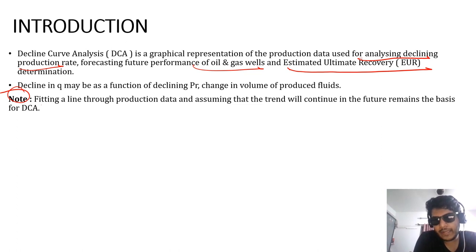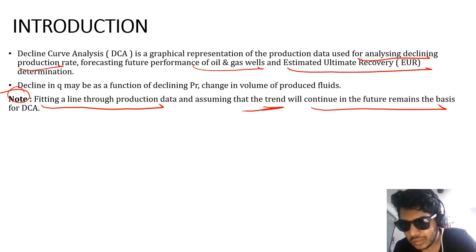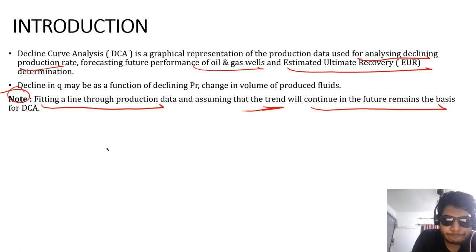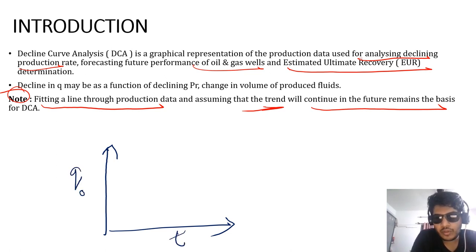What we are doing basically is fitting a line to the production data. We are obtaining some trend out of the production data and assuming that the trend continues in the future. Let's say we have a graph of q versus time — q of oil, where q is flow rate of oil in barrels